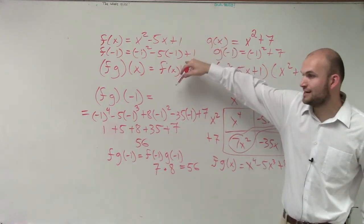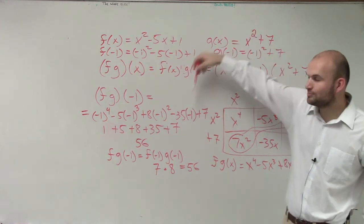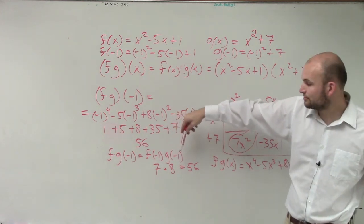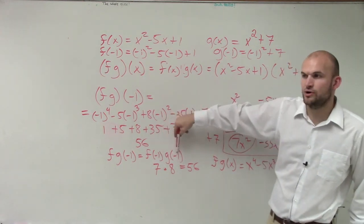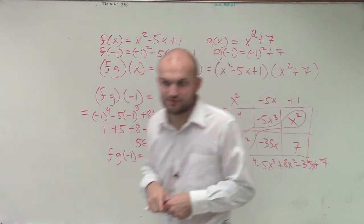So what you guys notice is there's two different ways to do this. You guys can either multiply them. Mallory, this is what I want you to understand. You can either multiply them and then evaluate for your number, or what you can simply do is evaluate each one and then multiply. Okay?